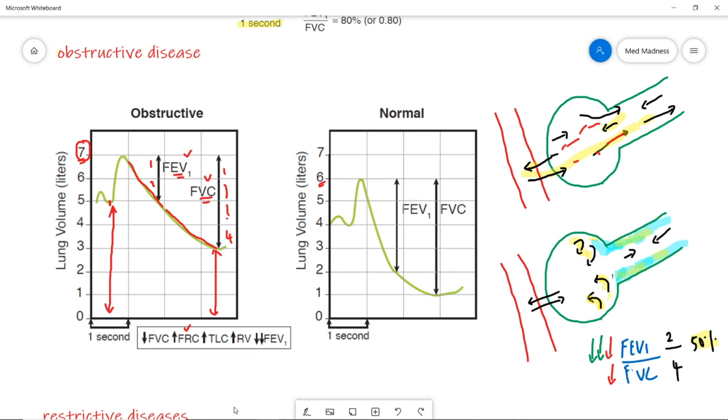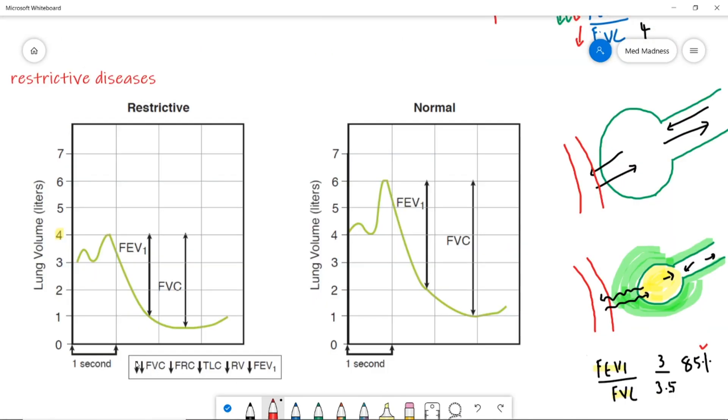I hope now you are very clear. Now, let's go on to the restrictive disease pattern. Before doing this restrictive pattern, focus on the sketch here to understand the pathology. So, for example, take fibrosis or pneumoconiosis. These are the examples for restrictive diseases.